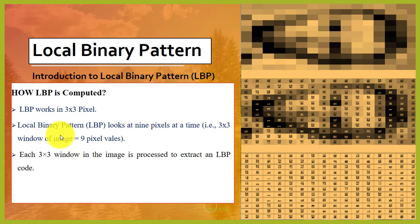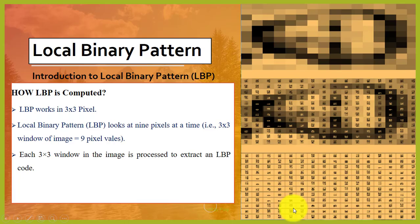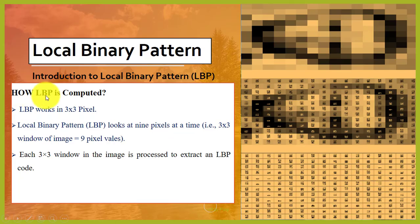Next question: how is LBP computed? As you can see, a digital image is just a table of numbers. Using LBP we can compute the value for each pixel. LBP works on a 3x3 pixel window, looking at 9 pixels at a time.